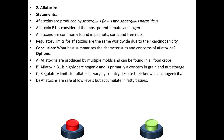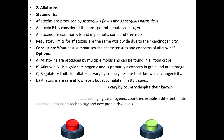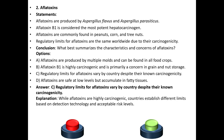Regulatory limits for aflatoxins are not the same worldwide despite their carcinogenicity. Question: What best summarizes the characteristics and concerns of aflatoxins? Option A: Aflatoxins are produced by multiple molds and can be found in all food crops. Option B: Aflatoxin B1 is highly carcinogenic and is primarily a concern in grain and nut storage. Option C: Regulatory limits for aflatoxins vary by country despite their carcinogenicity, as countries establish different limits based on detection technology and acceptable risk levels. The answer is C.